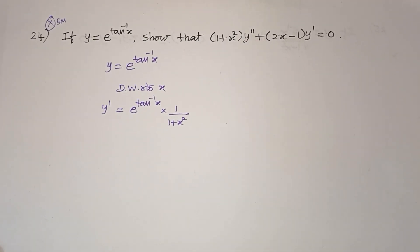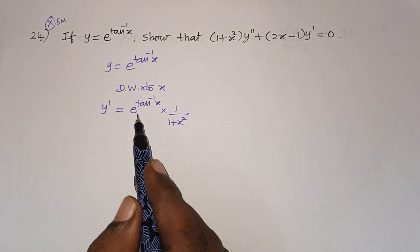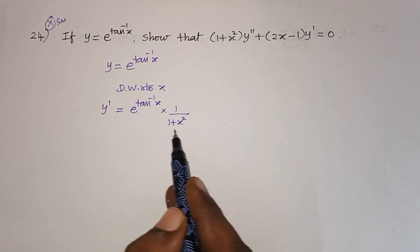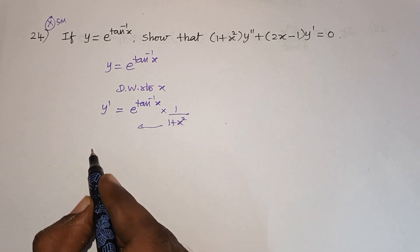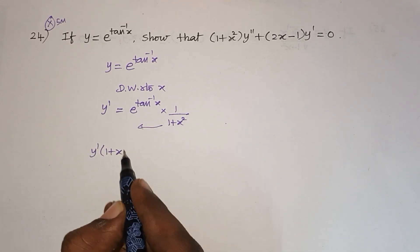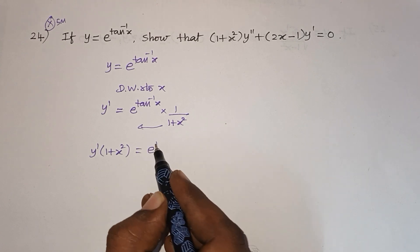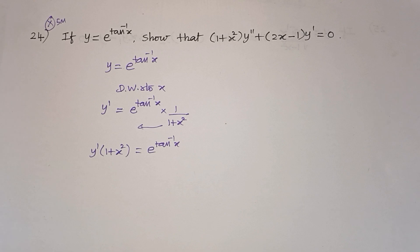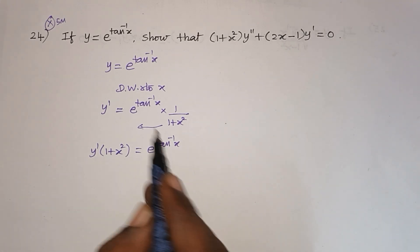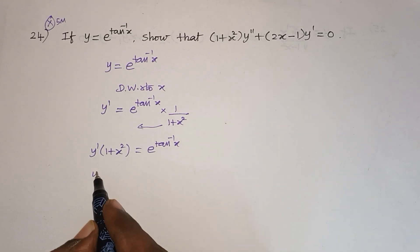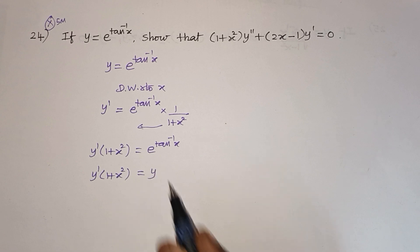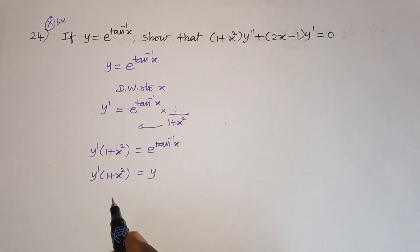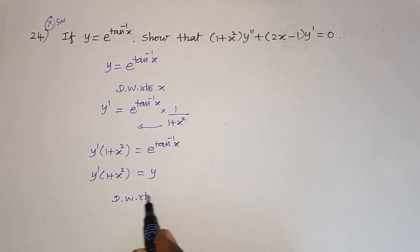First, e to the power x differentiates as e to the power x. Then using chain rule, the term in the power, tan inverse x, differentiates as 1 by (1 + x²). So y' = e to the power tan inverse x multiplied by 1 by (1 + x²).